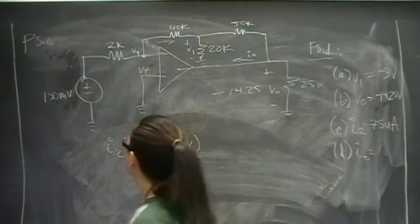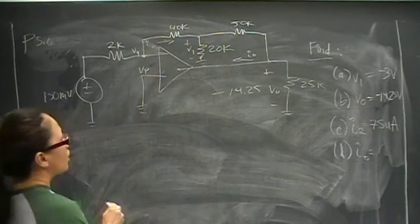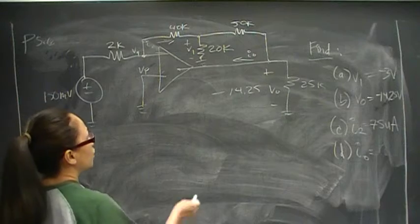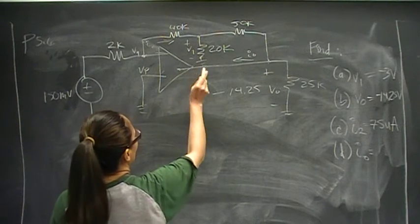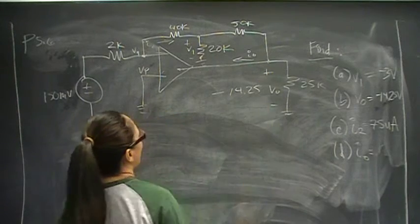And I0 is defined from here going in. But we don't know what this voltage drop here is. So we have to solve it by doing KCL there.